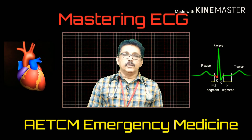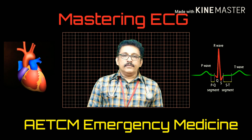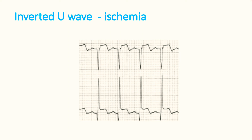Now we will look at causes of an inverted or negative U-wave. Classically, you don't see any U-wave in most patients, but rarely you can see an inverted U-wave in conditions like coronary artery disease, hypertension, valvular heart disease, congenital heart disease, cardiomyopathy, and hyperthyroidism. An inverted U-wave always indicates ischemic heart disease, while a prominent U-wave after the T-wave always indicates hypokalemia.